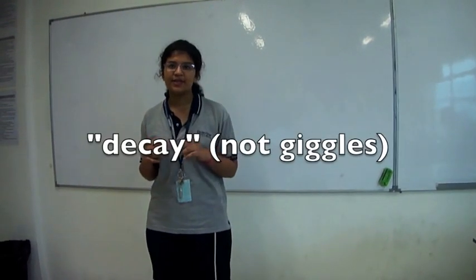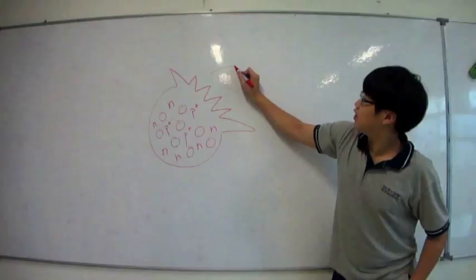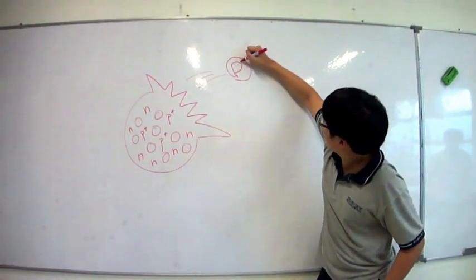There are three main types of radioactivity. The first is alpha decay. It occurs when the atom ejects a particle from the nucleus. Both the atomic number and mass decrease.